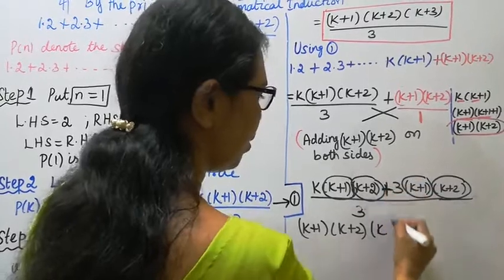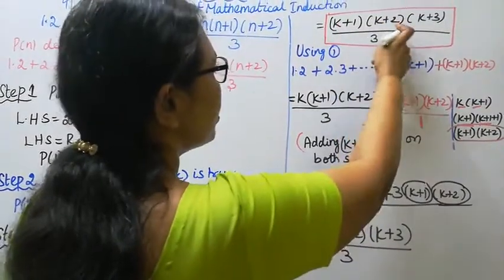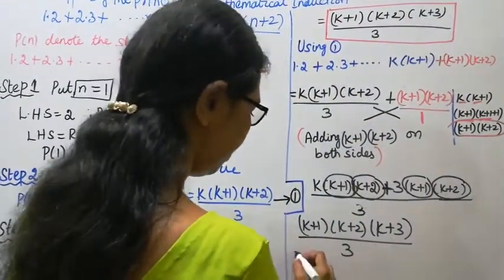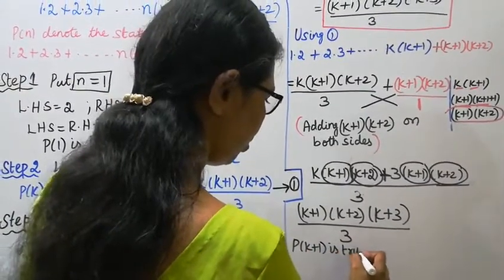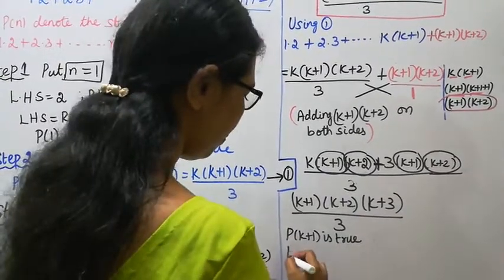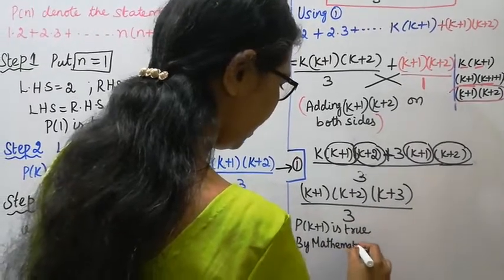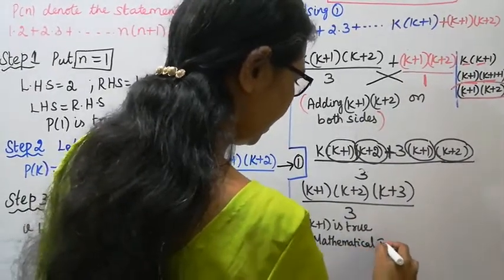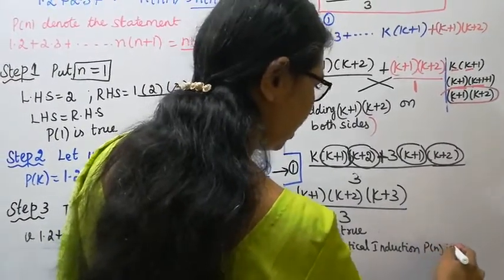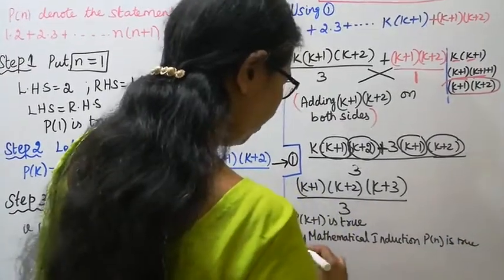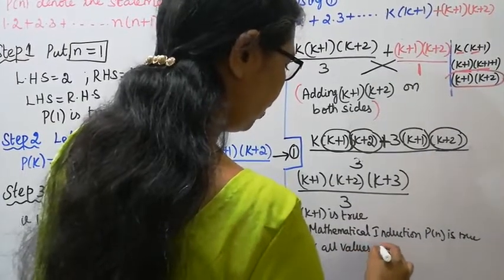Therefore, P(k+1) into k+2 into k+3 by 3 is shown. P(k+1) is true. Hence by mathematical induction, P(n) is true for all values of n.